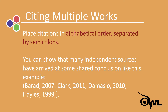To cite multiple works in the same parenthetical, place the citations in alphabetical order, separated by semicolons. Listing authors in alphabetical order helps readers retrieve sources in the reference list, where they will appear in the same order. You might cite multiple authors in the same parenthetical like this if you're trying to demonstrate that many independent sources have arrived at some shared conclusion.